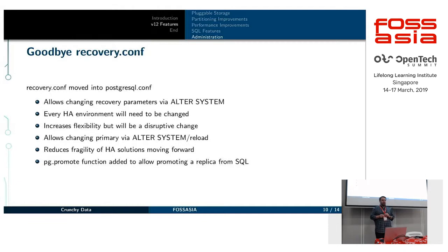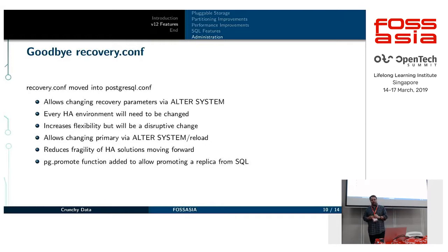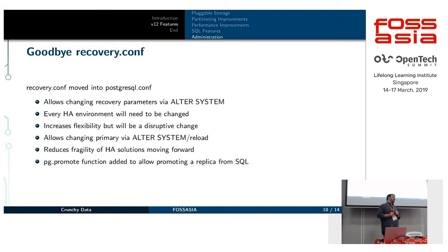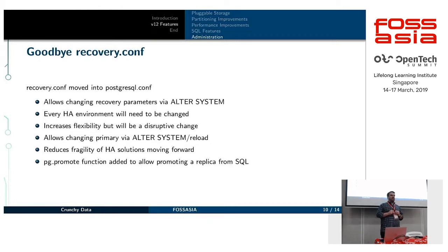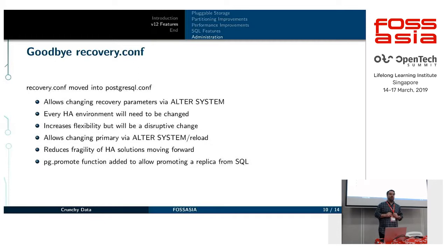This change will reduce the overall fragility of HA solutions moving forward. It also allows a SQL-level function called pg_promote, which you can call on a replica to have Postgres just get promoted. Additionally, this allows you to change, on the fly on a Postgres replica, which primary it's pointing to for its replication stream — previously you had to restart Postgres on the replica to follow a new primary. Tools like Patroni and other HA solutions will pick up on this quickly because it's really important and valuable.